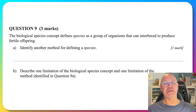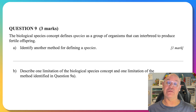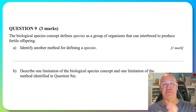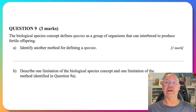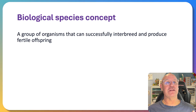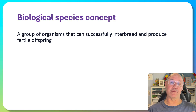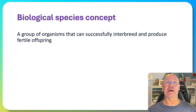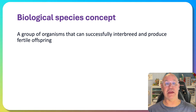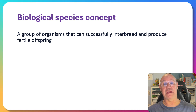The best way to think about this is by looking at both the benefits and the limitations of each concept, because they all have their role. Firstly, the biological species concept is probably the one you know most. It defines a species as a group of organisms that can successfully interbreed and produce fertile offspring.